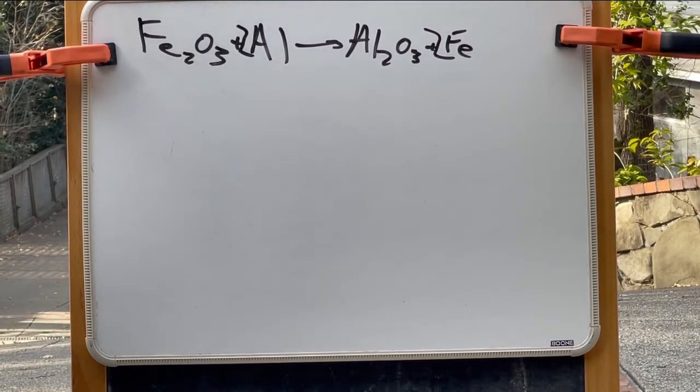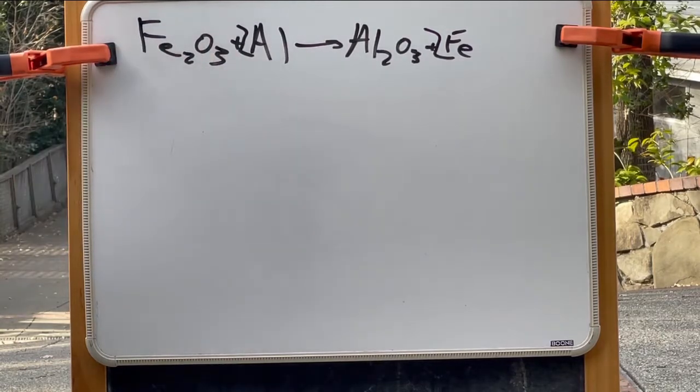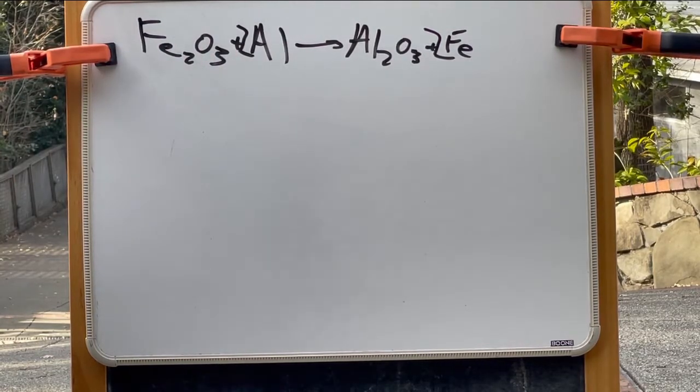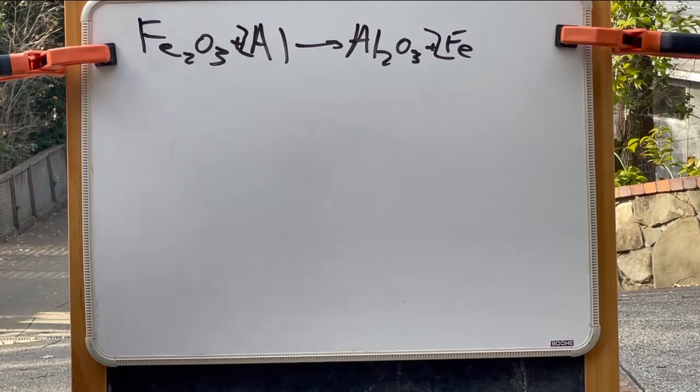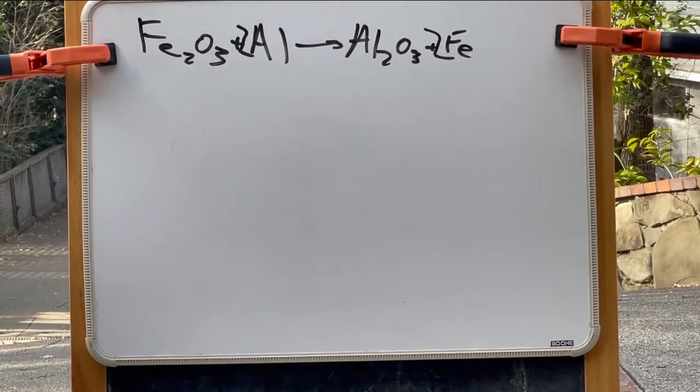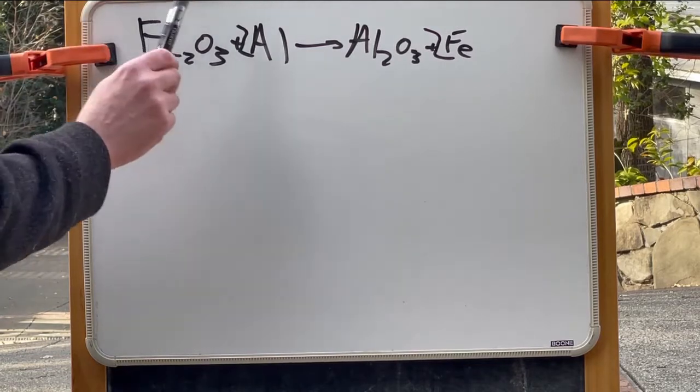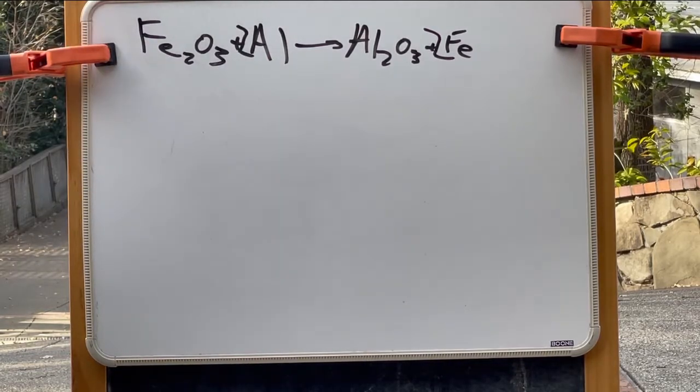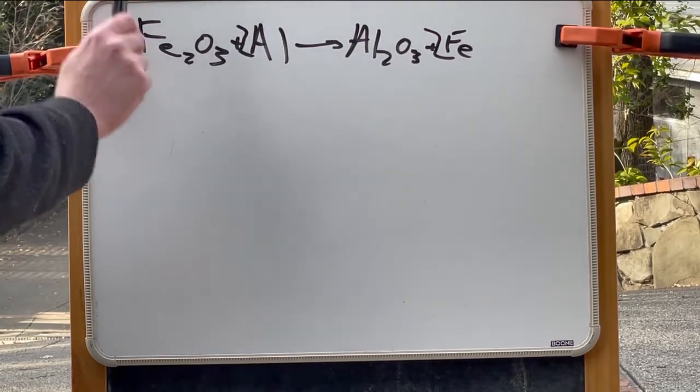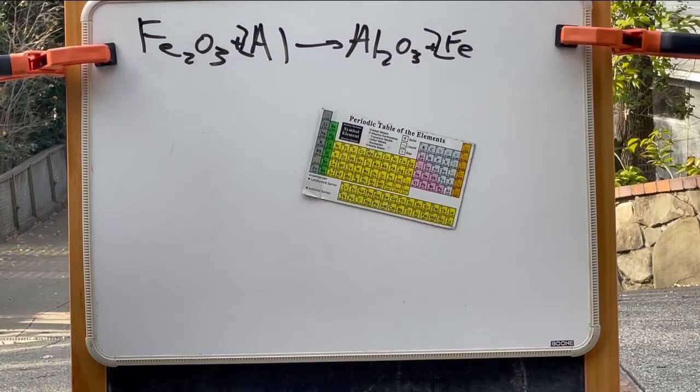Next thing we need to know is what is the ratio of the two reactants that we need such that they will be used up completely during this reaction. That is called the stoichiometric ratio, and in order to do that we need the atomic weight of the two reactants. To get that, all we have to do is add up the atomic weight of the individual atoms, and for that we need our handy-dandy refrigerator magnet periodic table of the elements.